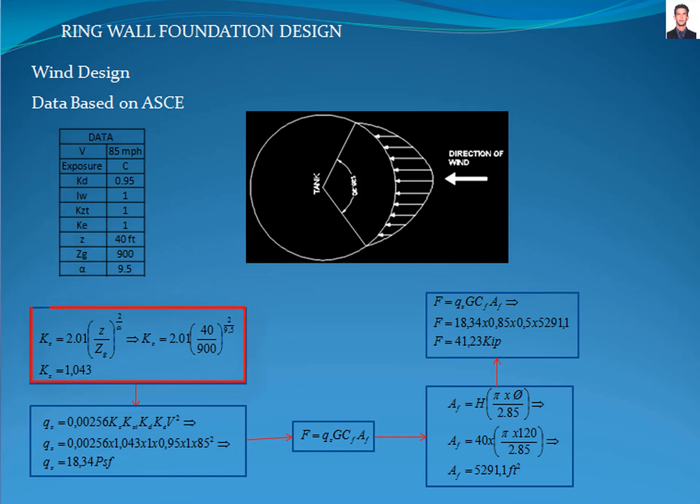Now, we proceed to calculate the velocity pressure exposure coefficient Kc with this equation, where CG and alpha are tabulated in table 26.11-1, resulting in 1.043.